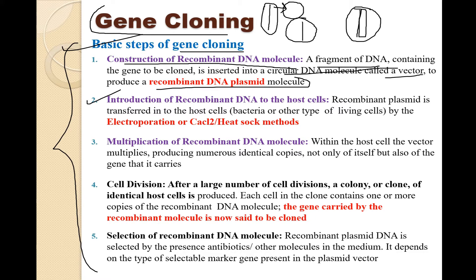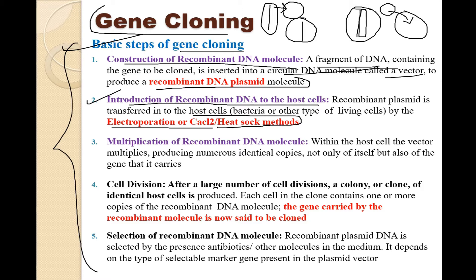Coming to the second step: introduction of recombinant DNA to the host cells. After we have prepared the recombinant DNA, we will introduce it into the host cell. This is done by two methods: electroporation or CaCl2, or the heat shock method. These are the two methods followed to introduce a recombinant DNA into a host cell.